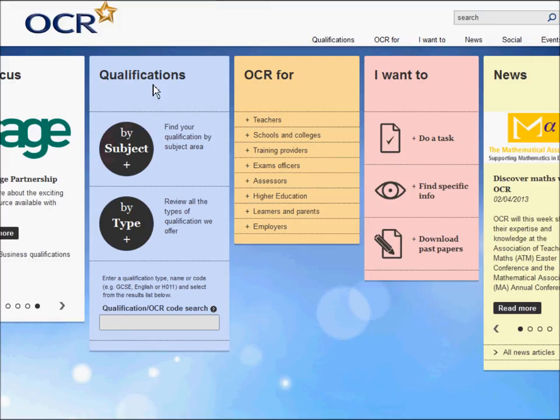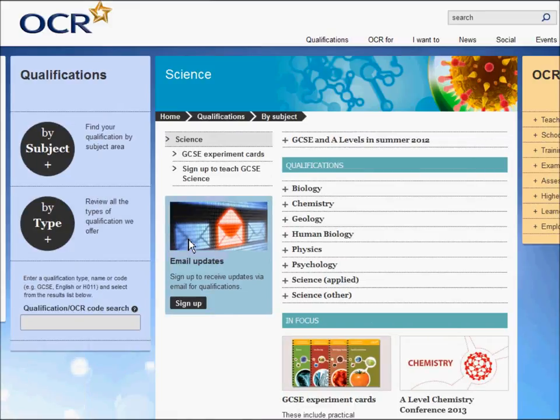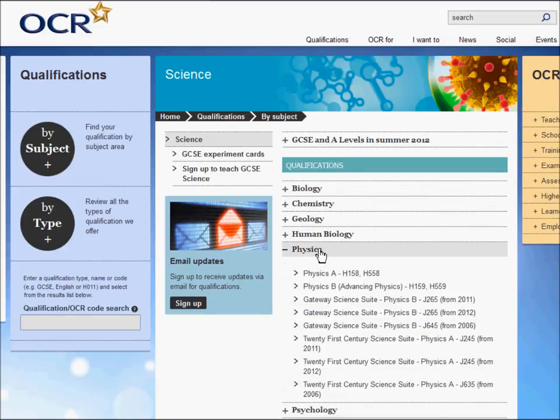But something you should definitely have a look at is if you go to the internet and go to the OCR website. I did subject, selecting science, I've got here physics. Now what we're actually doing is down here, physics 21st century, and it's physics A it's called, and we're doing it from 2011.